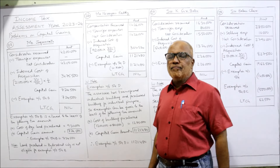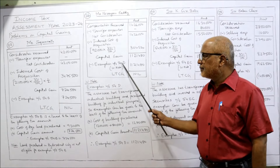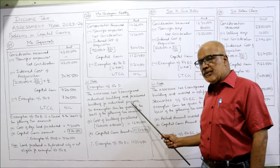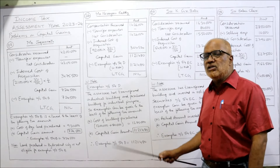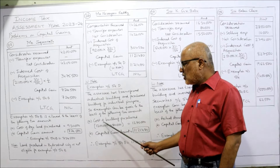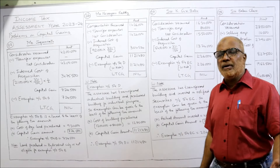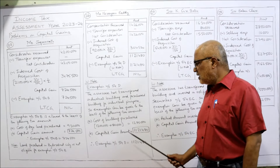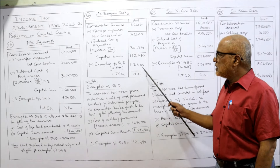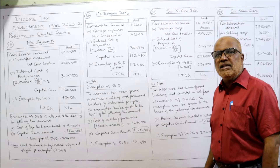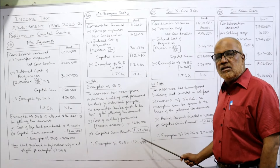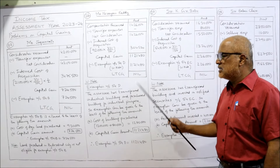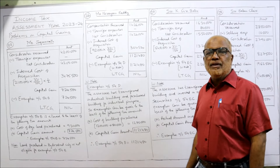Now exemption under section 54D. The assessee has transferred an industrial building and purchased a building for industrial purpose, so exemption under section 54D is allowed to the least of the following two. Cost of the new building purchased: 12,00,000 plus 80,000 for renovation = 12,80,000. Capital gain amount: 11,21,480. Whichever is least — 11,21,480 is least. So exemption under section 54D is 11,21,480 and LTCG will be nil.